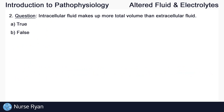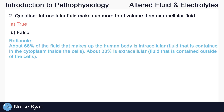Moving on to question number two. Intracellular fluid makes up more total volume than extracellular fluid. The answer here is A, true. About 66%, or two-thirds, of the fluid that makes up the human body is intracellular — fluid that is contained in the cytoplasm inside the cells. About 33%, or one-third, is extracellular fluid contained outside of the cells.